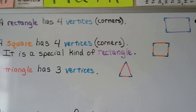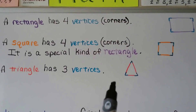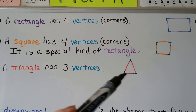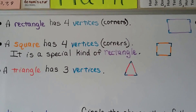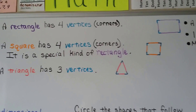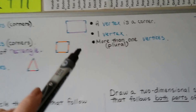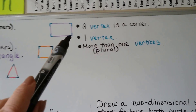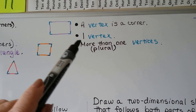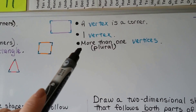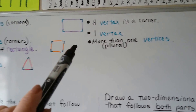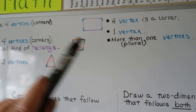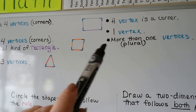And a triangle has three vertices: one, two, three. When there's just one of them, it's called a vertex. But when there's more than one, we call them vertices. That's plural — it's more than one.